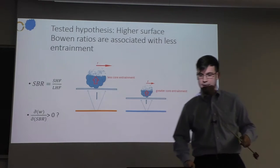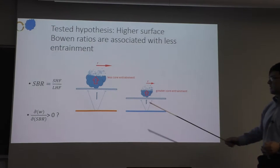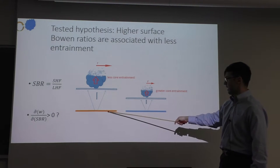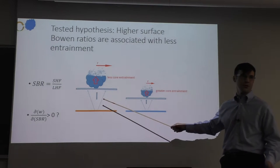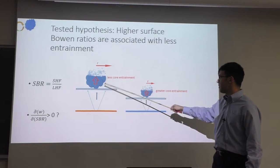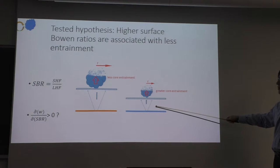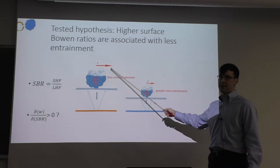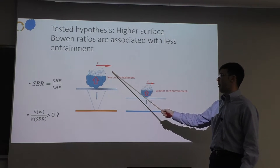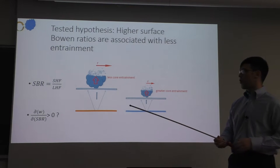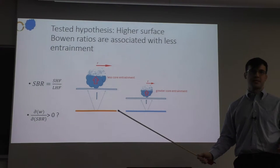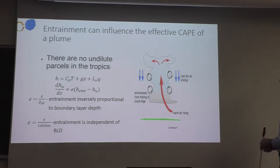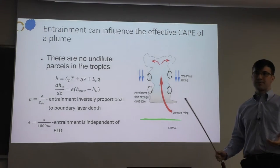The first mechanism I'm testing is that higher surface Bowen ratios are associated with less entrainment. If you have a higher Bowen ratio with the same net flux, you get a deeper boundary layer. If you have a deeper boundary layer, you get a wider updraft, which condenses into a wider cloud, and then presumably less core entrainment from the environment. The overall question is: do high-intensity updraft velocities increase with decreasing entrainment? Entrainment can influence the effective CAPE of a plume, and all thunderstorms in the tropics experience at least some entrainment.